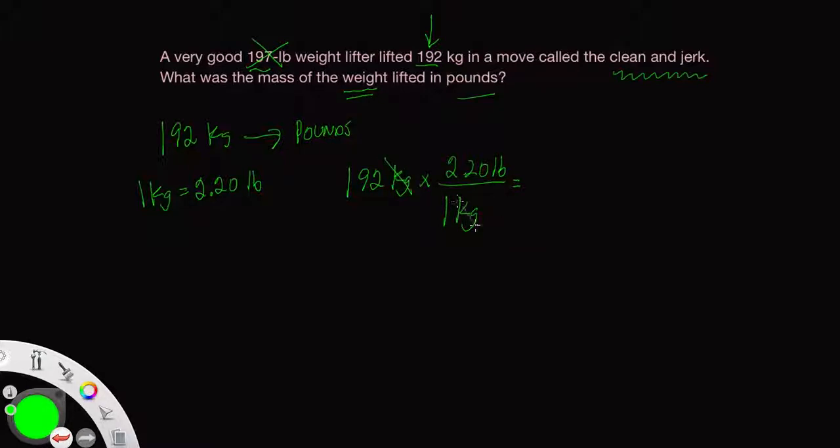Go ahead and punch this into your calculator. The kilograms cancel, so 192 times 2.2 is 422.4. Round this off to three sig figs - 422 pounds. That's our final answer.